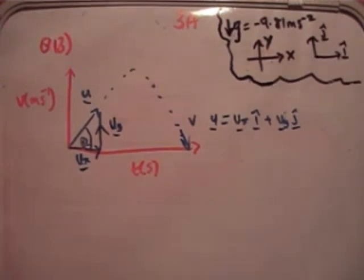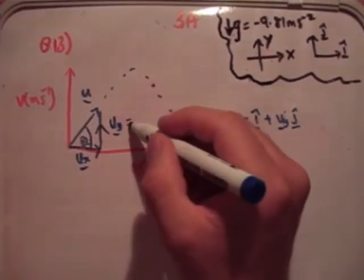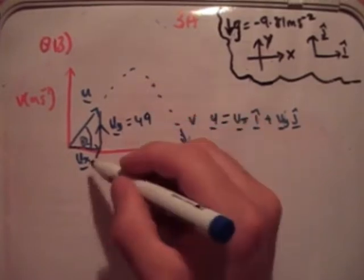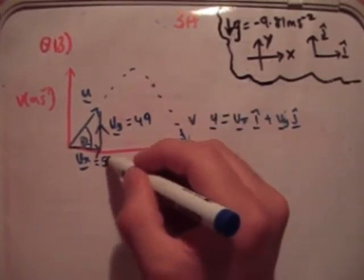Alright, so what's next? We need to find its range. So we're told that the particle is projected at 50 i-hat plus 49 j-hat. So that means this is equal to 49, this is equal to 50.